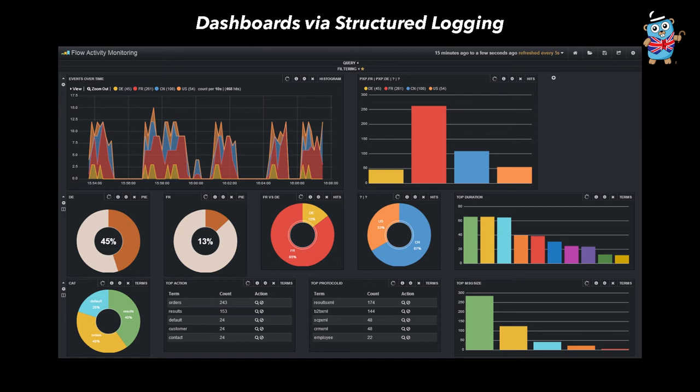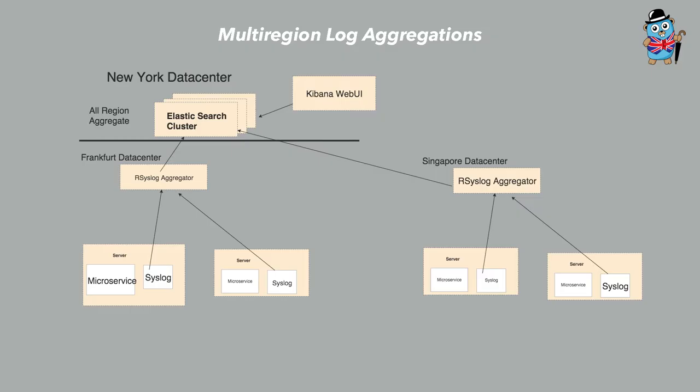I think at some point logging and metrics are just going to combine into one thing, but that hasn't quite happened yet. What we do is each microservice logs to syslog on the local machine, and then we have an aggregator per data center. That aggregator stores the logs temporarily and then pushes it all into New York - we just have our main logging cluster in one region in New York. We have 11 different data centers, so we have to actually buffer the logs before we push them into New York, otherwise we'd end up losing logs along the way.